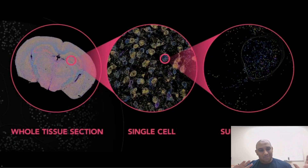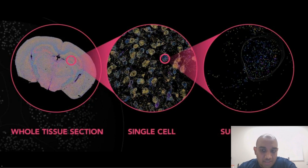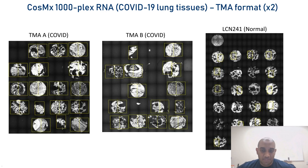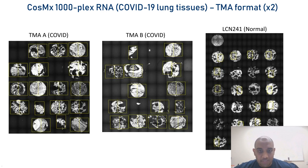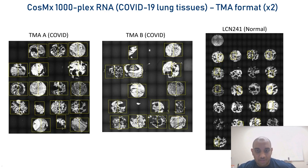We're now transitioning toward single cell subcellular assessment. We collaborated with NanoString on the new CosMx subcellular technology, which enables a deep dive on individual cell types and subcellular assessments. On the CosMx platform, we looked at about a thousand transcripts per cell on a new TMA with 20 patient samples — lungs in duplicate with both biological and technical replicates — plus control lung tissue as a comparator.